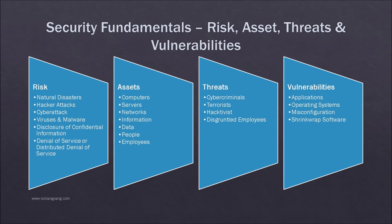Assets include people, property, and information. People may include employees, customers, contractors, or guests. Property assets consist of both tangible and intangible items that can be assigned a value; intangible assets include reputation and proprietary information. Information may include databases, software code, and critical company records. A threat is anything that can exploit a vulnerability, intentionally or accidentally, to obtain, damage, or destroy any asset. A vulnerability refers to weaknesses or gaps in a security program that can be exploited by threats to gain unauthorized access to an asset.